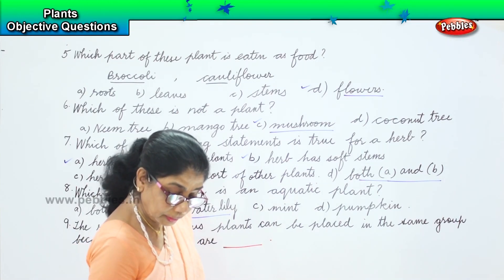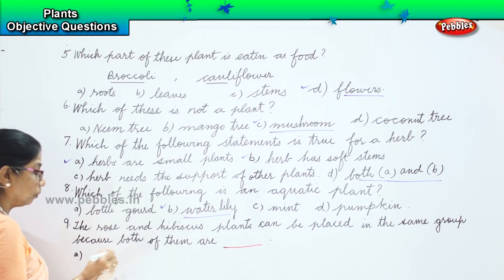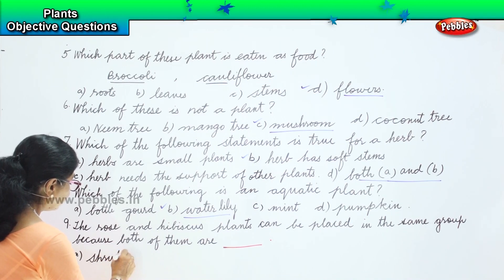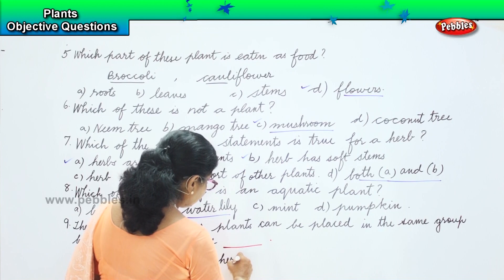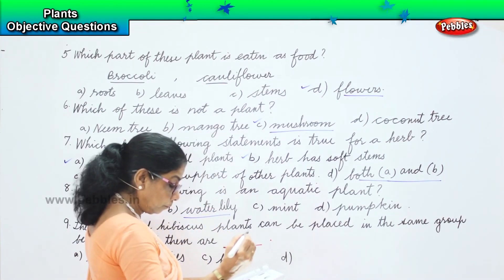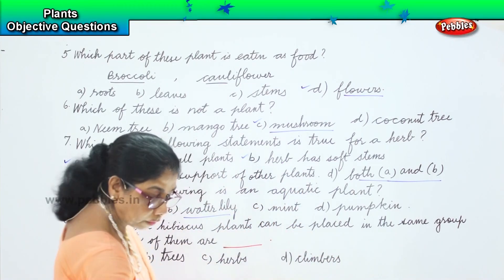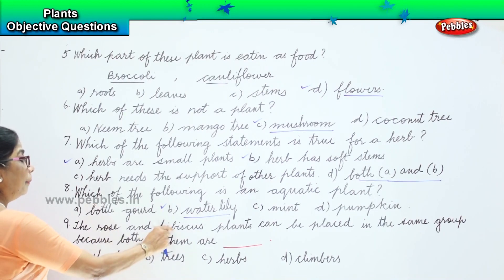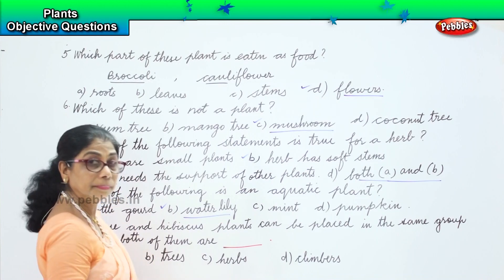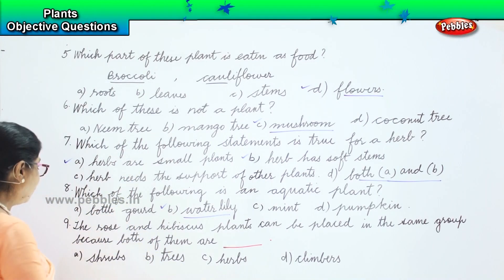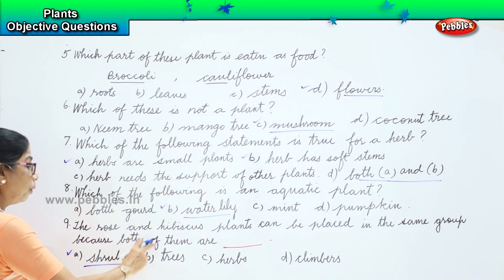The options are: option A, shrubs; option B, trees; option C, herbs; and option D, climbers. Now, rose and hibiscus — what are they? Are they trees? No. Are they herbs? No, they are not tiny plants. Are they climbers? No. They are small plants — they are shrubs. Rose and hibiscus can be placed in the same group because both of them are shrubs.